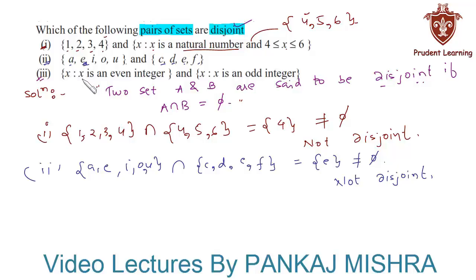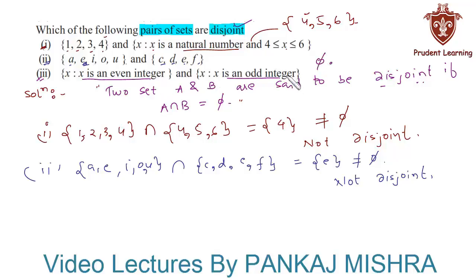In the last section, we have the set of x such that x is an even integer, and the set of x such that x is an odd integer. There can be no number common to both sets, since no number is both even and odd. So the intersection of these two sets is an empty set, hence the given pair of sets is a disjoint set. This completes our solution.